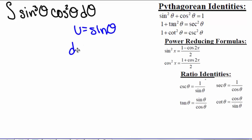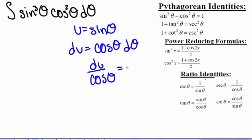We'll get du equals cosine of theta d theta, or du divided by cosine of theta equals d theta.